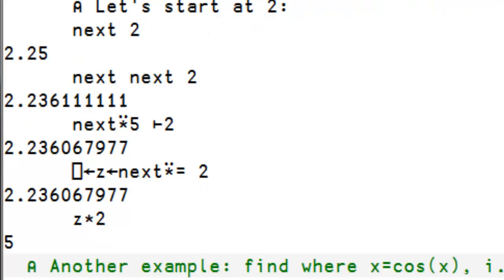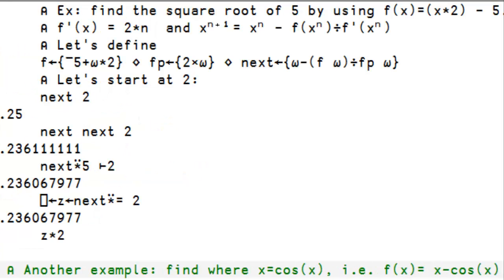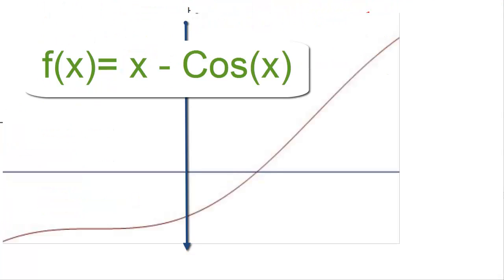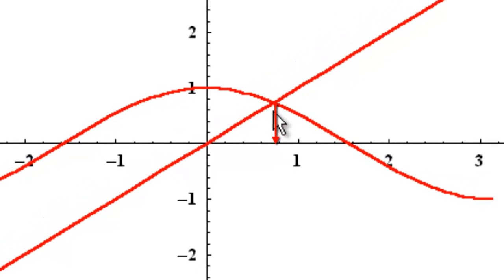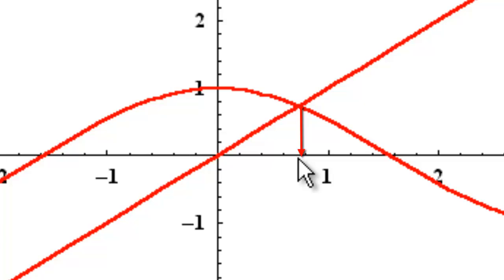Here's another example. This one is a little bit more complicated. We want to find out where x is equal to the cosine of x. To give us an idea, this is what the function looks like. So, we have x, the cosine of x, and we want to know where they meet. So, it's going to be somewhere in that area.